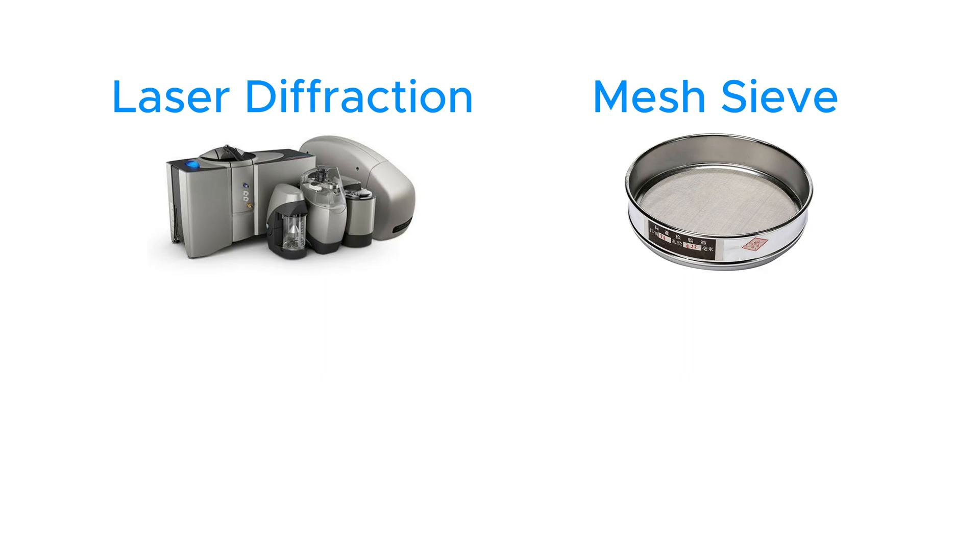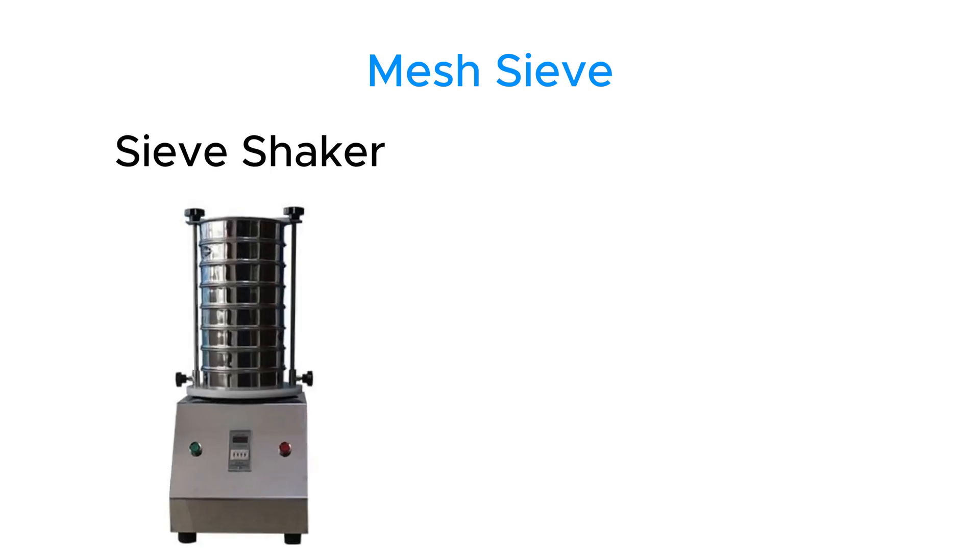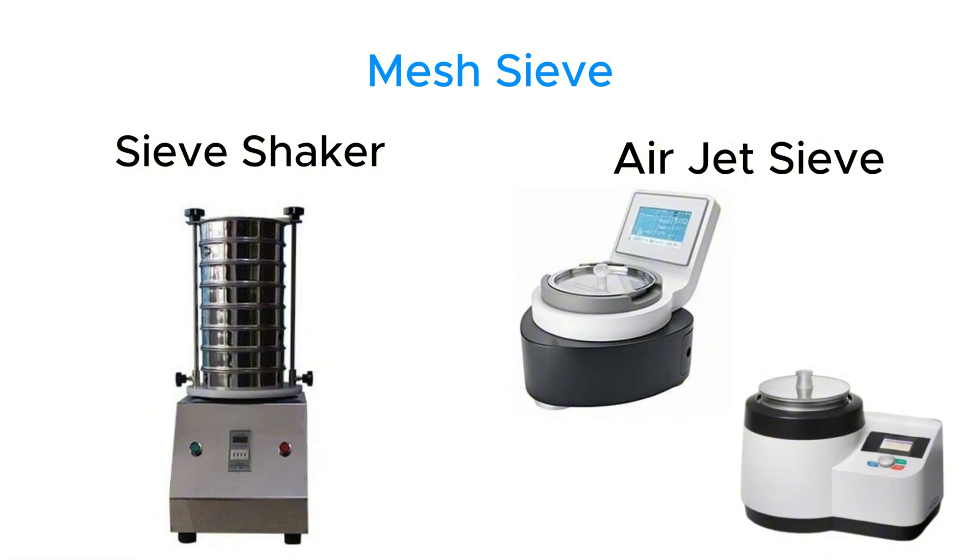Sieve-based methods provide a more affordable and widely used alternative. Within sieve-based methods, there are two primary options: vibratory sieving and airjet sieving. Vibratory sieves rely on mechanical shaking to pass particles through a stack of progressively finer mesh sieves, making them well-suited for coarse materials typically above 50 microns.